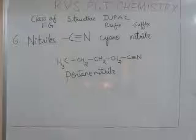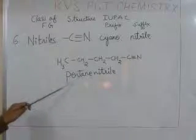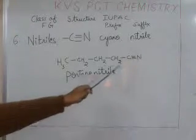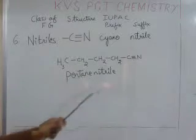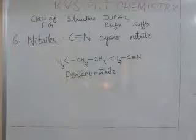So, let's take an example of 5 carbon atom chain which is called pentane, and the group C triple bonded N is called nitrile, so the name is pentanenitrile.